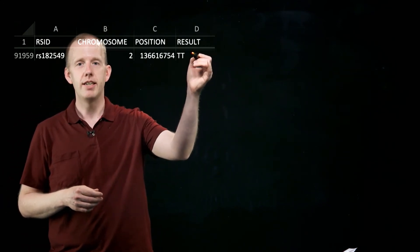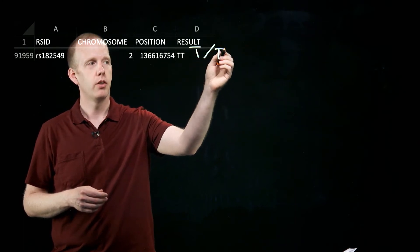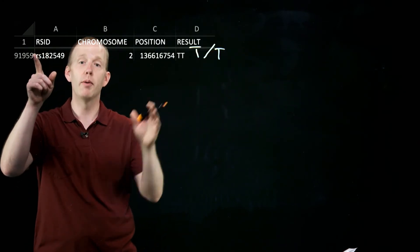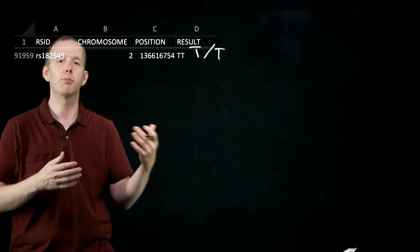And I have the TT type. So what that means is on both of my chromosomes, there's a T at that spot. And remember from the previous segment that the T is associated with lactase persistence,